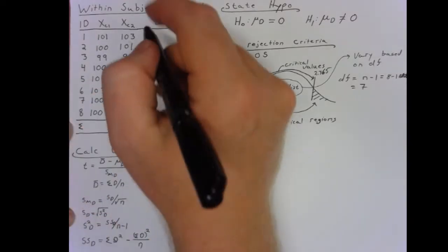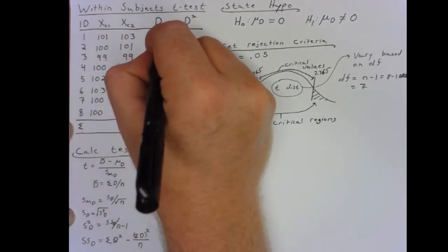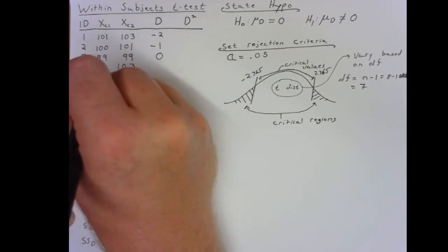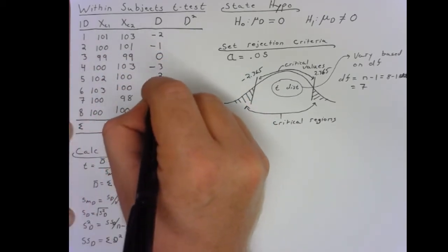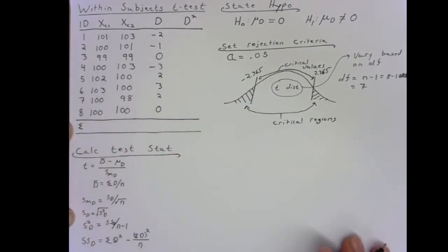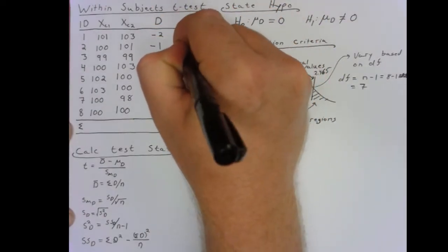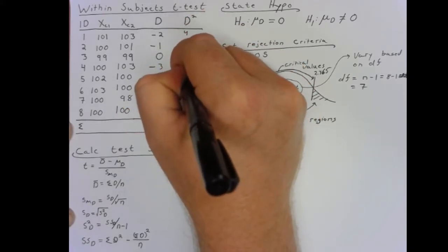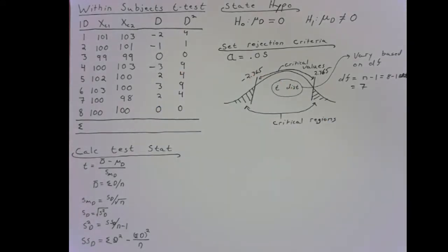If we go 100 minus 103, we're talking negative 2. 100 minus 101, negative 1. 99 minus 99 is 0. Negative 3, 2, 3, 2, 0. Negative 2 squared is 4. Negative 1 squared is 1. 0, 9, 4, 9, 4, 0. We can find those differences, and we can square them real quick, and then we can go about adding them all together.